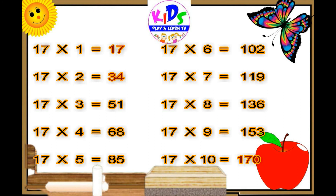17 6's are 102. 17 7's are 119. 17 8's are 136. 17 9's are 153. 17 10's are 170.